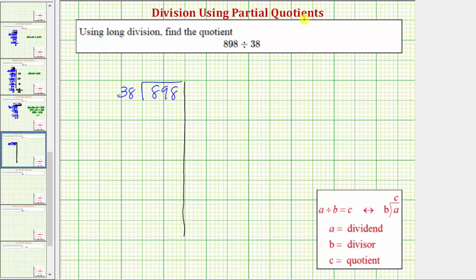Before we begin the method of partial quotients, it's often helpful to find products involving the divisor. Because our divisor is 38, let's find some products involving 38. For example, we know that 1 times 38 is 38.